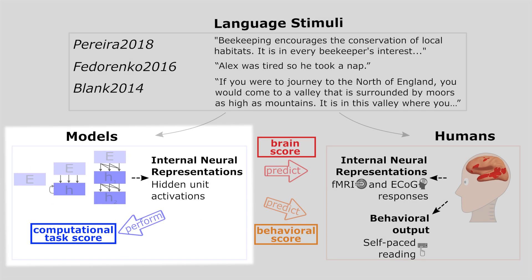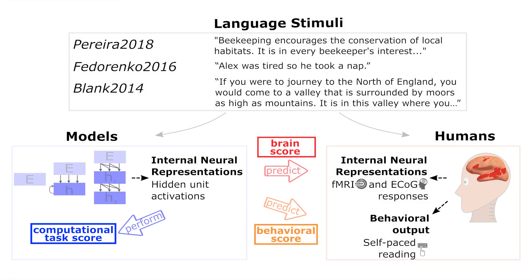In vision and sensory areas more broadly, we've recently had a lot of success using deep neural networks — networks that are trained usually with label supervision, have many layers that transform input, in this case pixels, into representations that can then perform object recognition. And those deep networks are able to predict neural representations as well as behavioral outputs to a reasonable first extent.